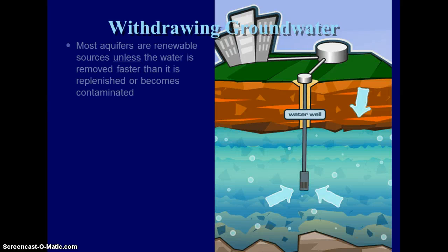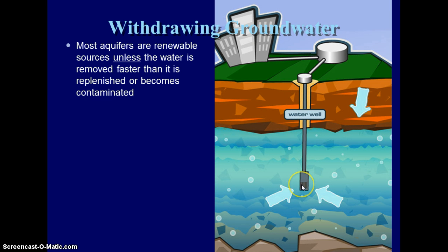When we withdraw groundwater, basically what we're doing is digging a hole and putting a pipe and a pump down to withdraw water from that aquifer. Aquifers are considered renewable as long as we aren't using the water faster than it's being recharged, or as long as it's not becoming contaminated.